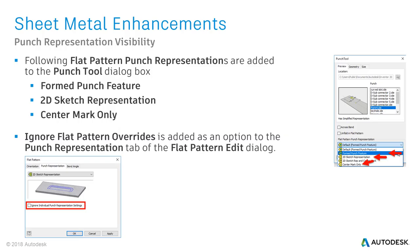If you often use sheet metal eye features, you will recognize the new Flat Pattern Punch Representations drop-down list in the Punch Tool dialog box. You can now create individual punch representations for each stamping shape in the Flat Pattern environment. Compared to Inventor 2016, the Punch Representation settings are controlled by the sheet metal rules in the Style and Standard editor and get applied to all inserted eye features.